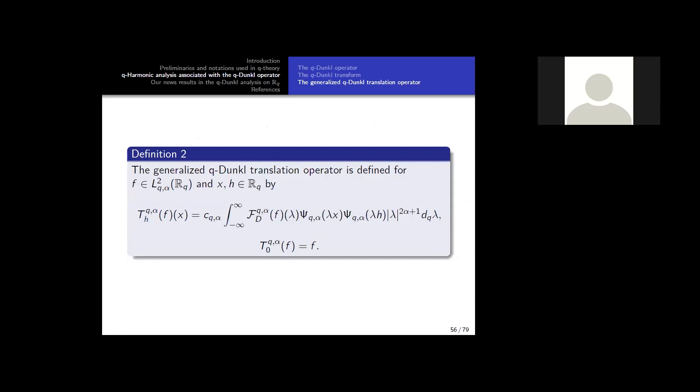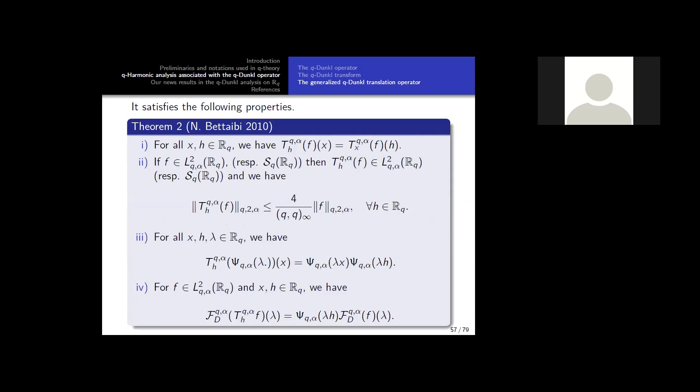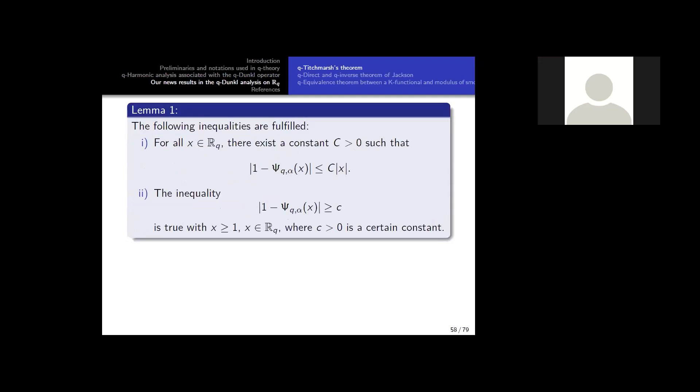When f belongs to L2, we have this definition of Q-analog of translation. And we have also some properties of this. And the crucial lemma is this lemma. This is a very important lemma that we used, where we have some estimate. It's an analog of some estimate used by Platonov, you know. We find the same lemma in the analog case.